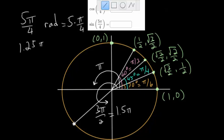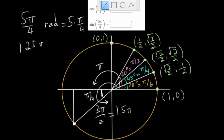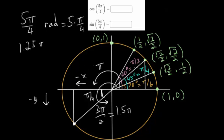Drawing a triangle here, this angle is just another π/4 past π, giving us the exact same triangle as the π/4 or 45-degree angle — a 45-45-90 triangle with the same side lengths. The only difference is that we're now in the third quadrant, where both the x and y values are negative. So it has the same root 2 over 2 values for its side lengths, but both are now negative. The x and y coordinates are both negative root 2 over 2.